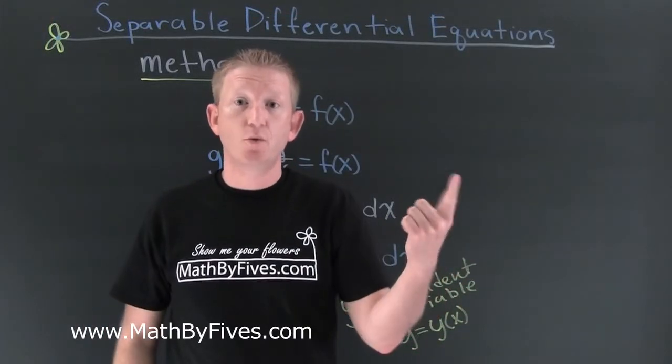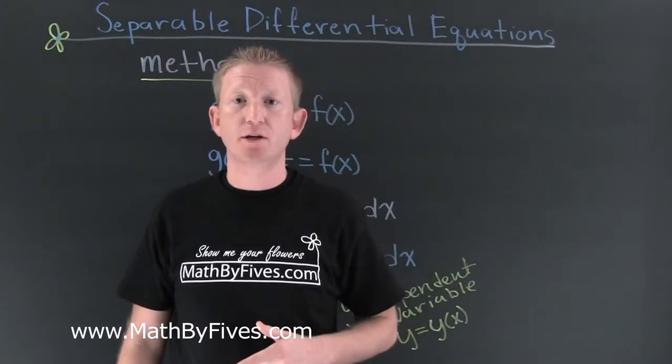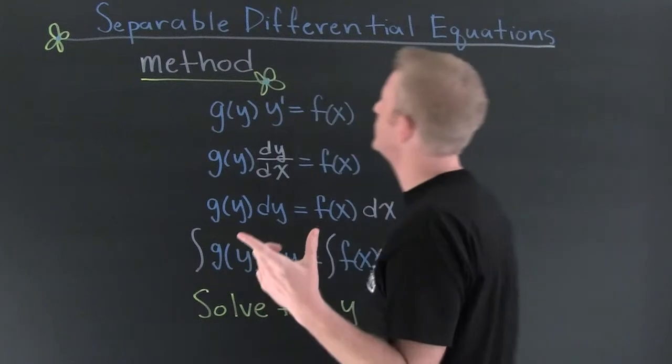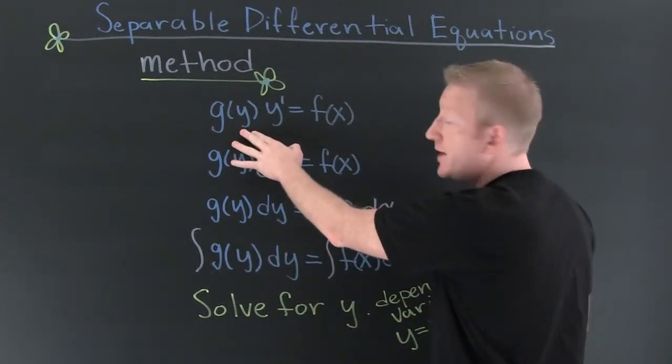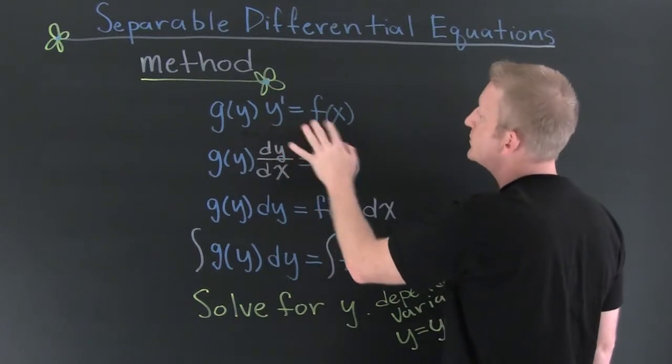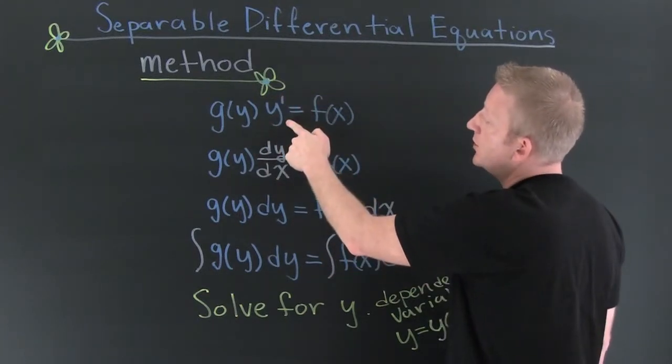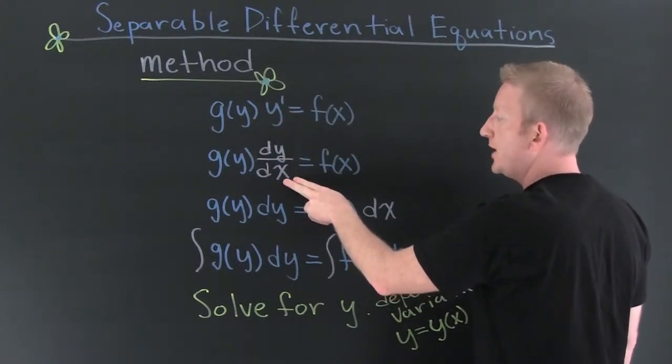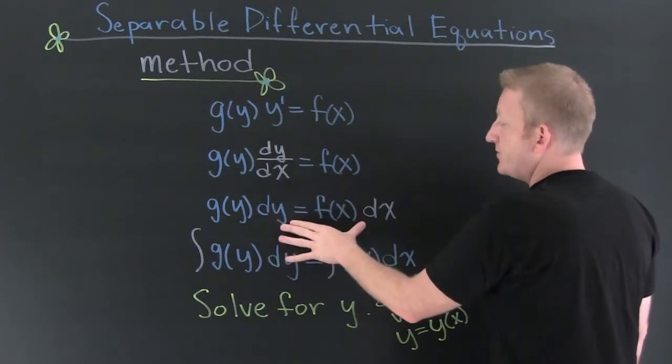Separable differential equations. Once we determine that something is of this form, this is the method we're going to use. We're going to take the first form that we had: g of y, a function entirely of y, y prime equals a function entirely of x. What are we going to do? We're going to take our prime notation and switch it to Leibniz notation. And then what are we going to do after that? We're going to separate our differential.